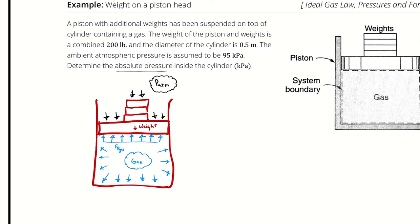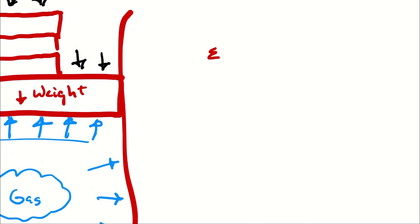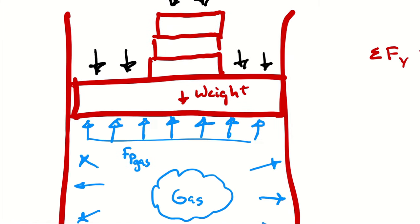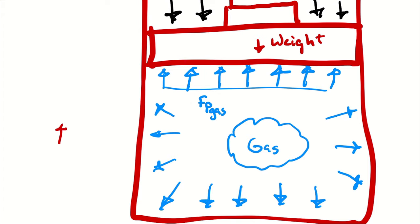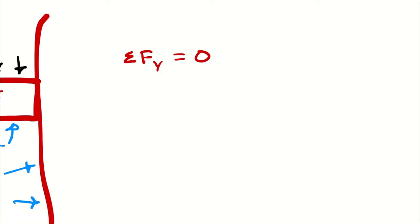We are going to consider this just like we would a statics problem. We are going to say the sum of forces in the y direction are zero. Because for it not to be moving, it must have balanced forces. So I can say the forces in the upward direction are going to counteract the forces in the downward direction.